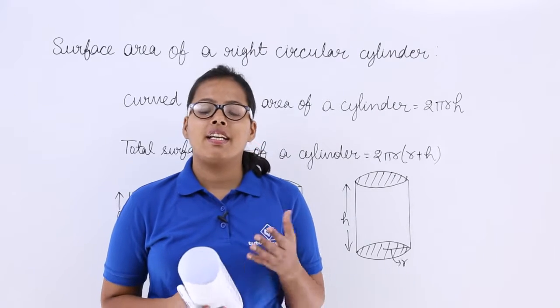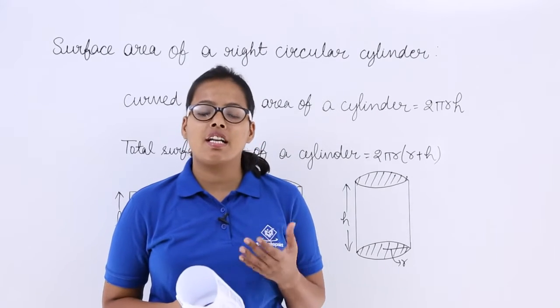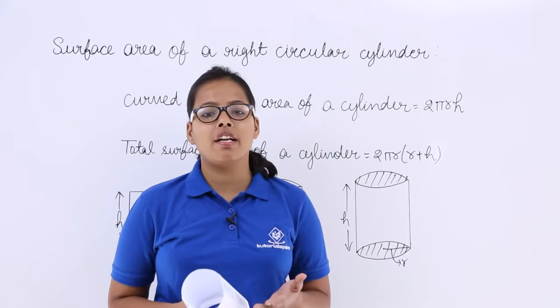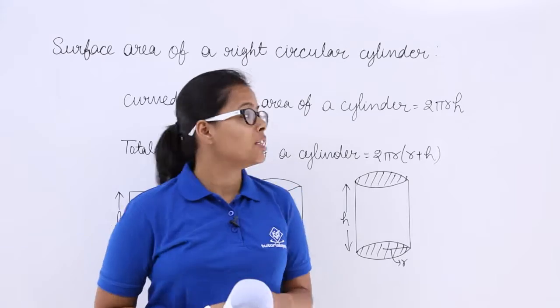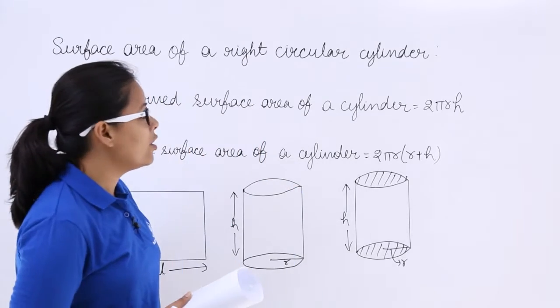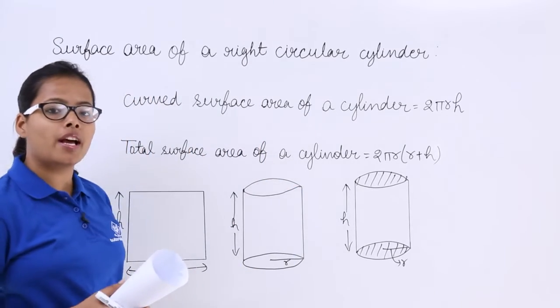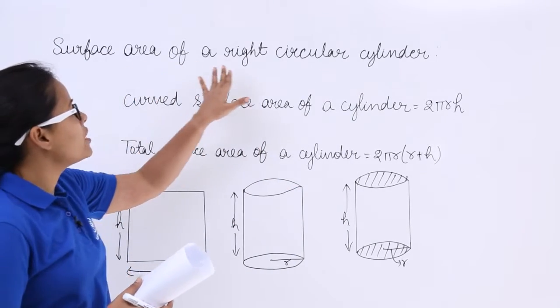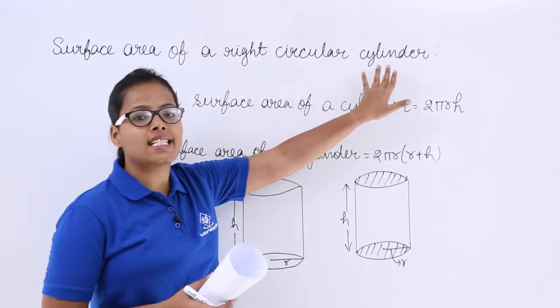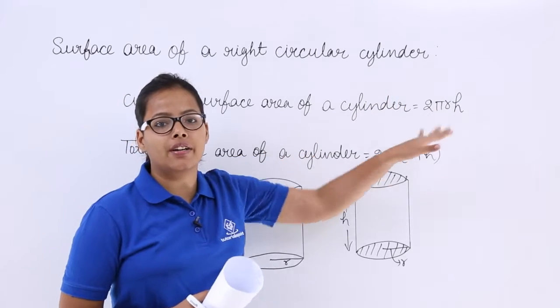Hello guys, let's discuss another formula under surface area and volumes. Let's see what this formula is for — it is for the surface area of a right circular cylinder.